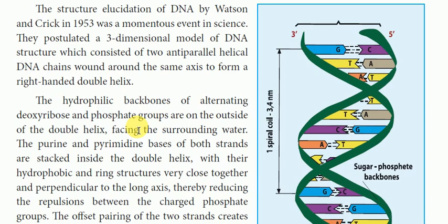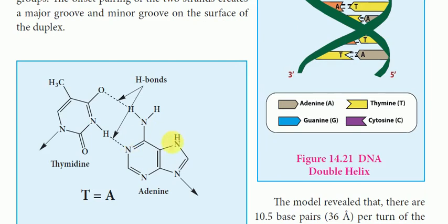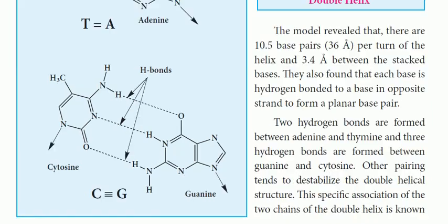This arrangement reduces the repulsion between the charged phosphate groups. The purines and pyrimidines are inside the double helix with hydrogen bonding. In the phosphate group, charged particle repulsion is reduced in a perpendicular shape. In adenine, there is a base with a hydrogen bond between them. The model involves 10.5 base pairs per turn.